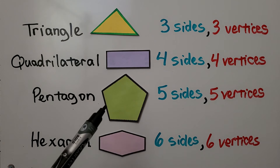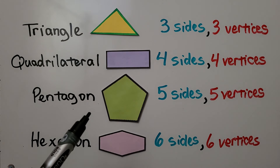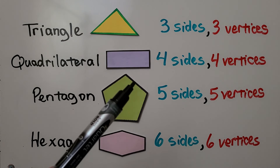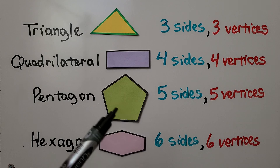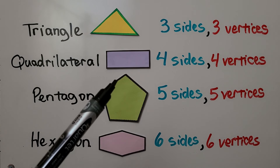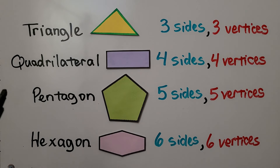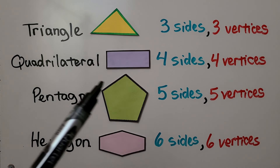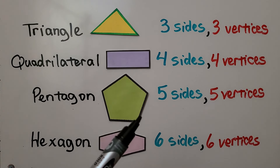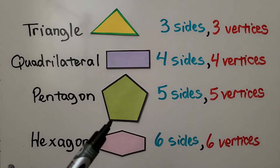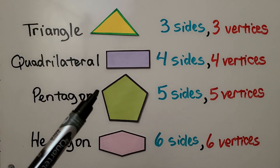This is a pentagon. It's got five sides — one, two, three, four, five. And it has five vertices — one, two, three, four, five.